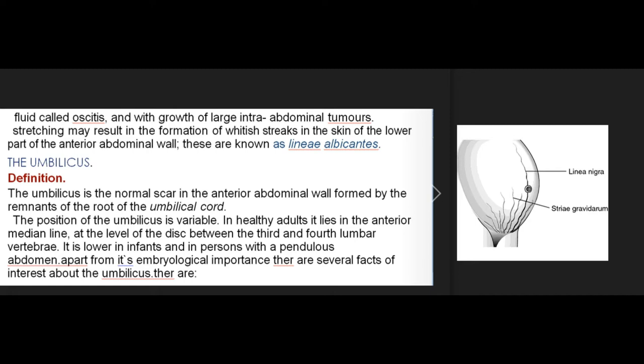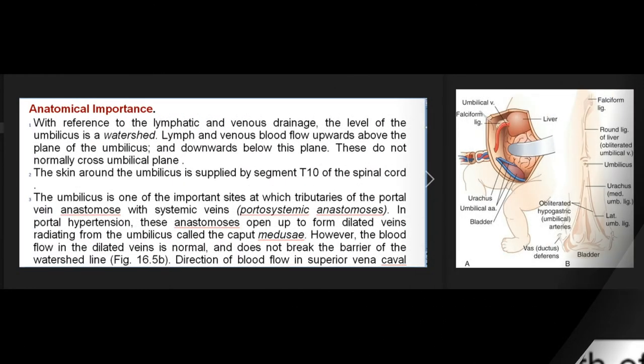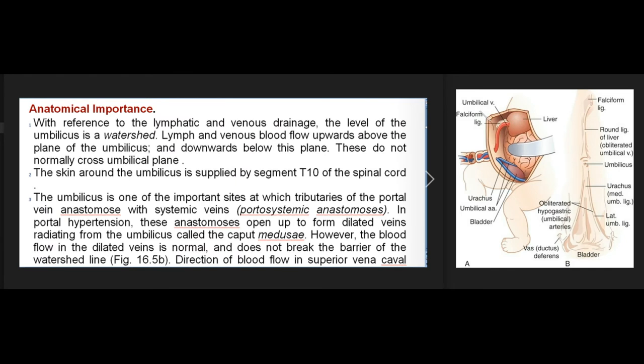The umbilicus. The umbilicus is the normal scar in the anterior abdominal wall formed by the remnants of the root of the umbilical cord. The position of the umbilicus is variable; in healthy adults it lies in the anterior median line at the level of the disc between the third and fourth lumbar vertebrae. It is lower in infants and in persons with a pendulous abdomen. With reference to the lymphatic and venous drainage, the level of the umbilicus is a watershed: lymph and venous blood flow upwards above the plane of the umbilicus, and downwards below this plane, and do not normally cross the umbilical plane.